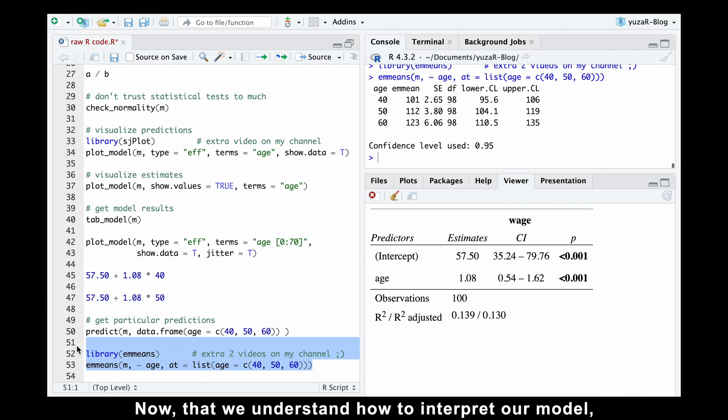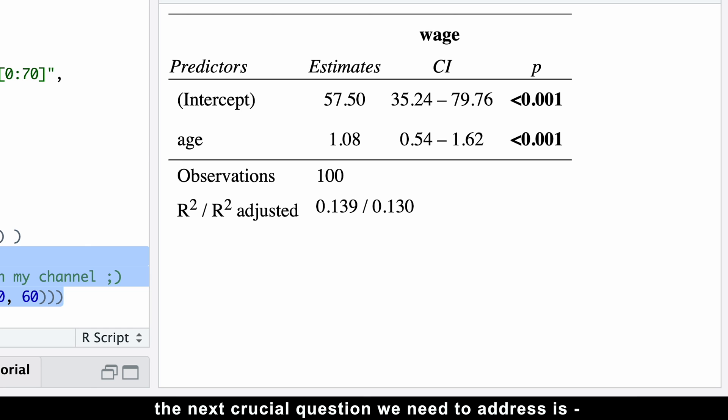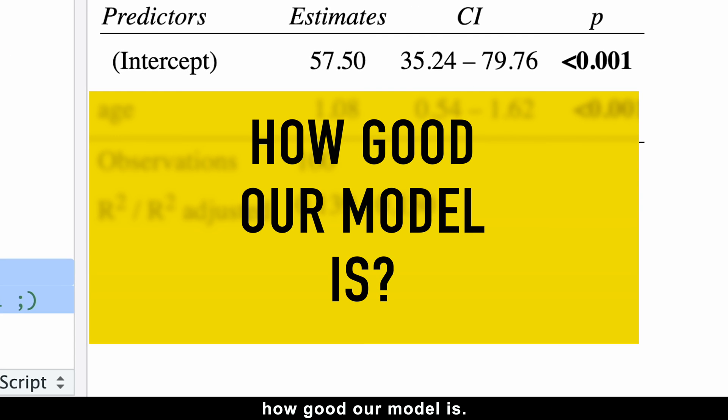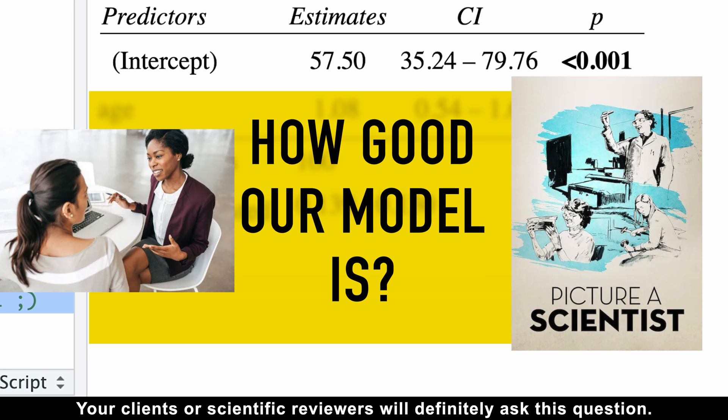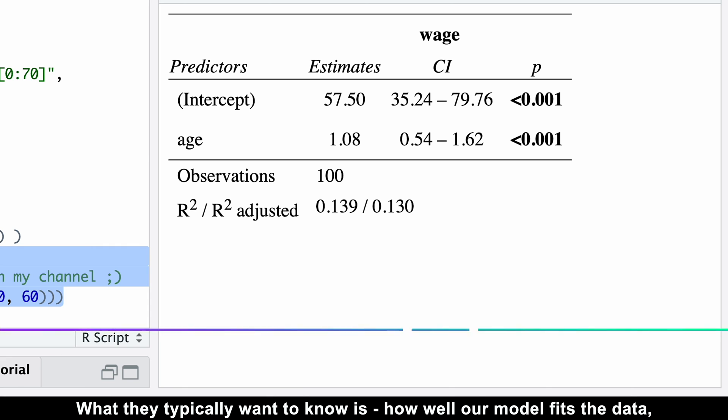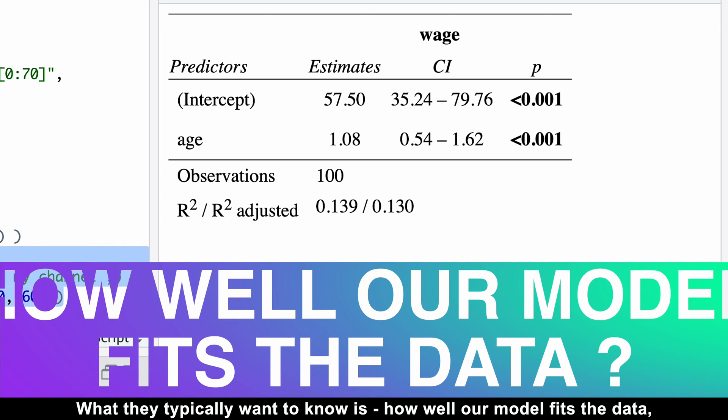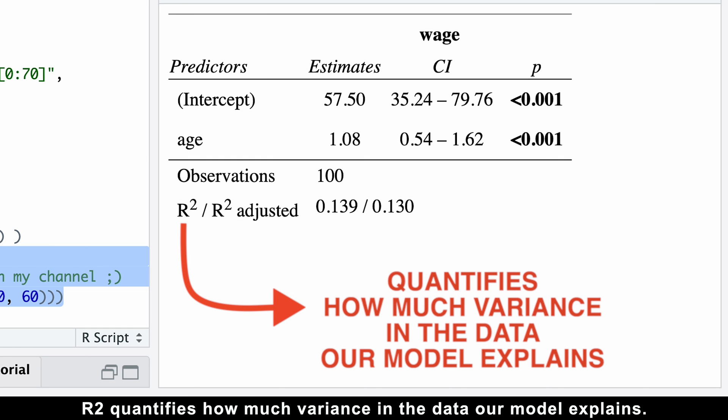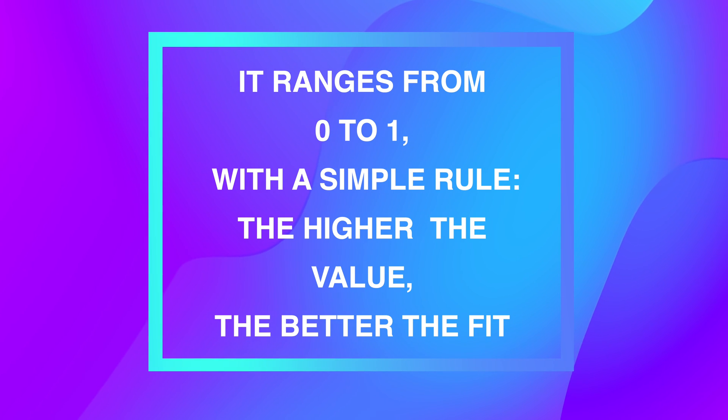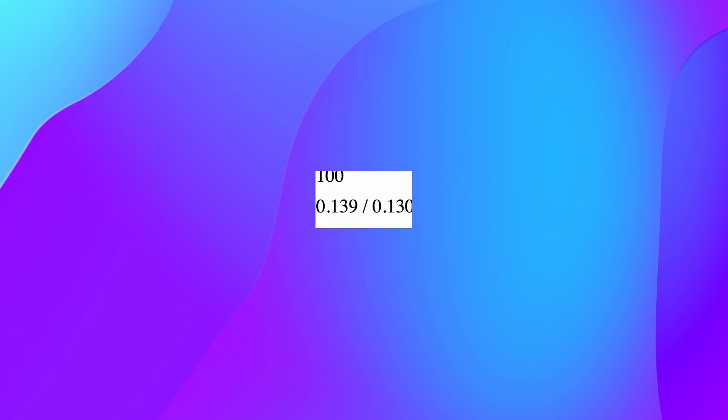Now that we understand how to interpret our model, the next crucial question we need to address is how good our model is. Your clients or scientific reviewers will definitely ask this question. What they typically want to know is how well our model fits the data, which is summarized by the coefficient of determination, denoted as R-squared. R-squared quantifies how much variance in the data our model explains. It ranges from 0 to 1 with a simple rule: the higher the value, the better the fit.